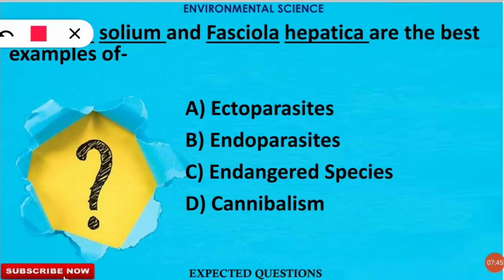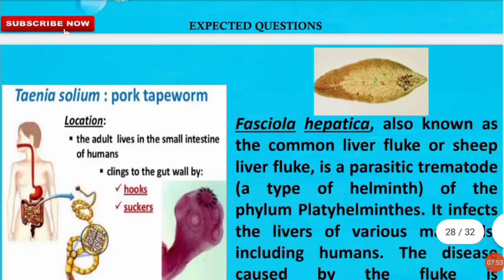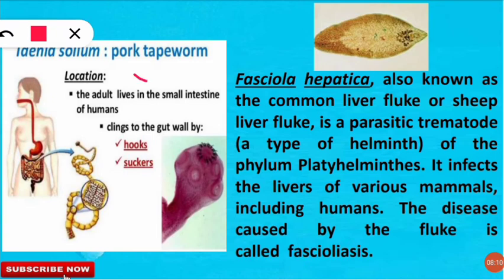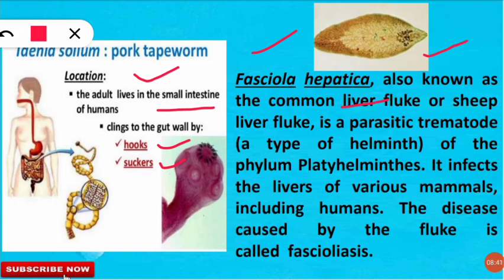The next question is: Taenia solium and Fasciola hepatica are the best examples of which of the following? The correct option is B — they are examples of endoparasites, which live inside the body of the host. Taenia solium is also known as the pork tapeworm, located in the small intestine of humans due to the presence of hooks and suckers. Fasciola hepatica, the common liver fluke, is a parasitic trematode from the phylum Platyhelminthes that infects the liver of mammals including humans, causing the disease fascioliasis.